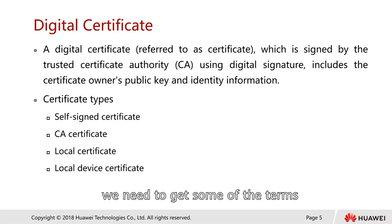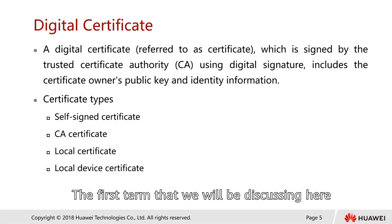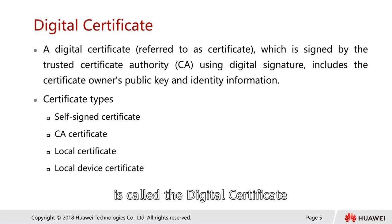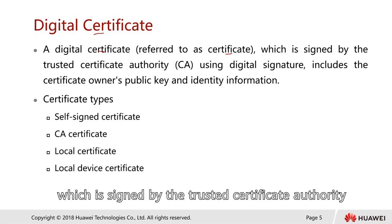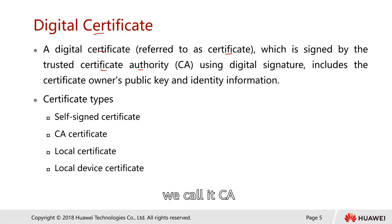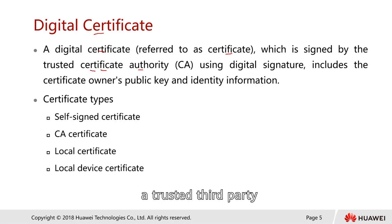First we need to clear up some of the terms. The first term we will be discussing is called the digital certificate. Sometimes a digital certificate is also known simply as a certificate, which is signed by a trusted Certificate Authority — in short, we call it CA. Usually a CA is actually a trusted third party.